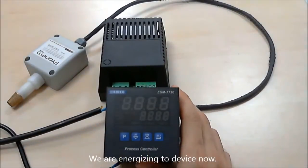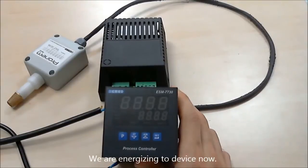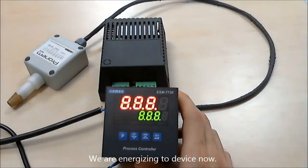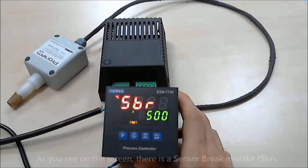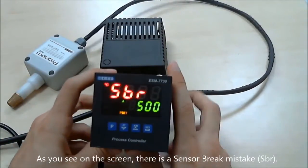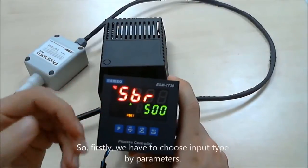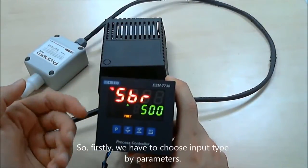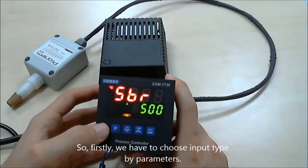Then we energize the device. We see the sensor break error on the screen now. This means we have to choose the input type for the device.